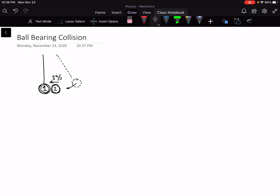Okay. After the collision, bearing one is moving two meters per second to the left. And bearing two is moving one meter per second to the right. Okay, so we've translated that into pictures.